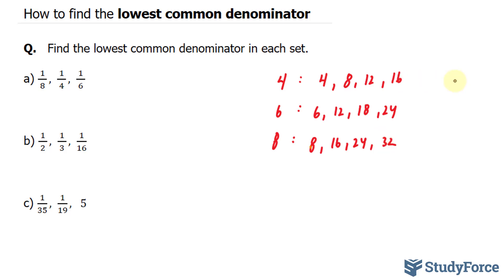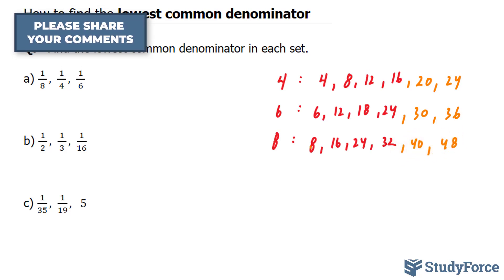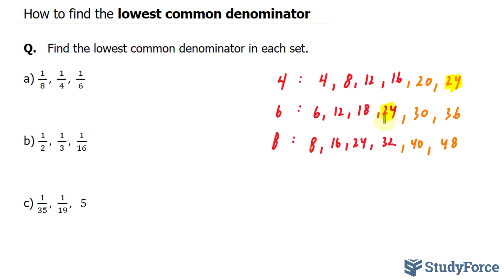Let's write down two more multiples of 4: we get 20 and 24. For 6, we have 30 and 36. And for 8, 40 and 48. Do you see anything in common now? Well, I do see a 24 in this set, a 24 in this set, and a 24 here. Therefore, the lowest common denominator is 24.